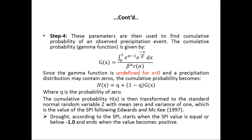In step four, the parameters alpha and beta are used to find the cumulative probability of an observed precipitation event. Since the gamma function is undefined for x equal to zero, and precipitation distributions may contain zeros, the cumulative probability takes the form of H(x), where q is the probability of zero. This cumulative probability H(x) is then transformed to the standard normal random variable Z with mean zero and variance one, which is the SPI value, following Edwards and McKee (1997).